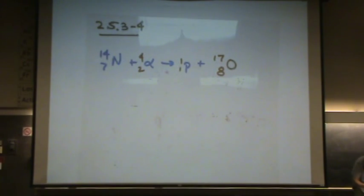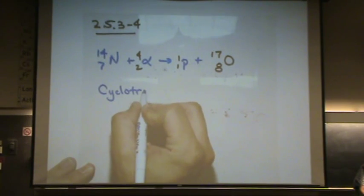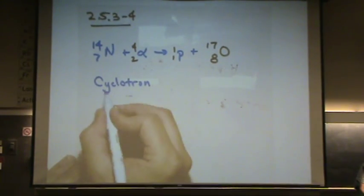So where is this done, what is it like? Something that's called a cyclotron, one example of where you can do it, or a synchrotron.